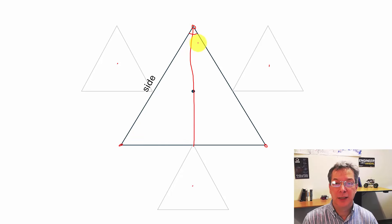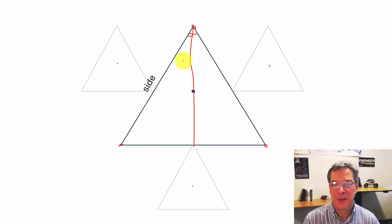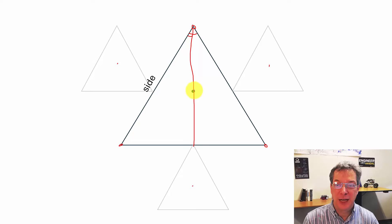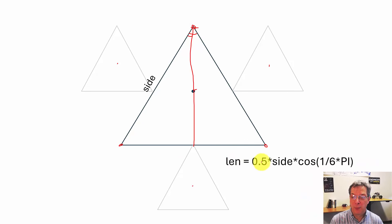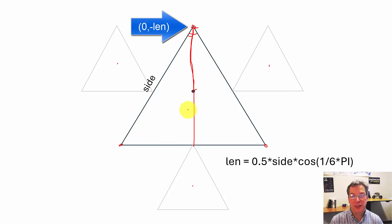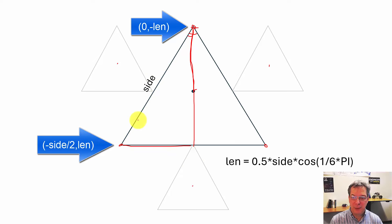This angle here is 60 degrees; half that angle is 30 degrees, or in radians it's one-sixth pi. If we take the side times the cosine of one-sixth pi, that gives us this length, but what we want is the y value, which is actually half that length. So we'll use that formula: half of the side times the cosine of one-sixth pi. That is the y value for the top point in the negative direction, and the y value for the two bottom points in the positive direction. The x distance for the bottom points is simply one-half of a side, since this is an equilateral triangle.